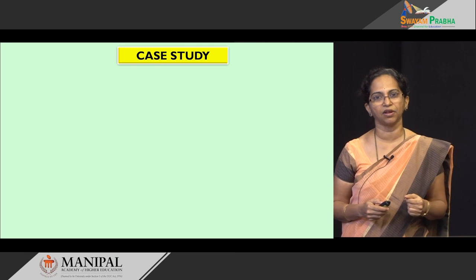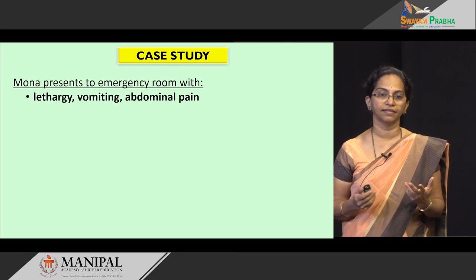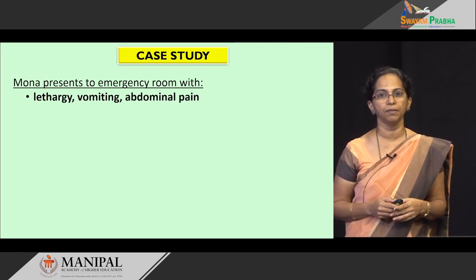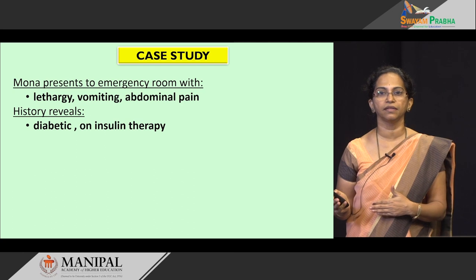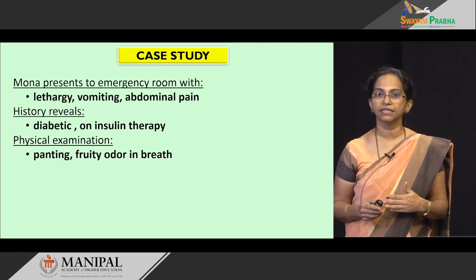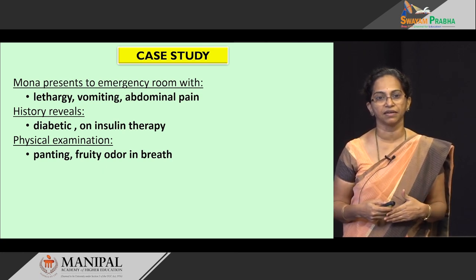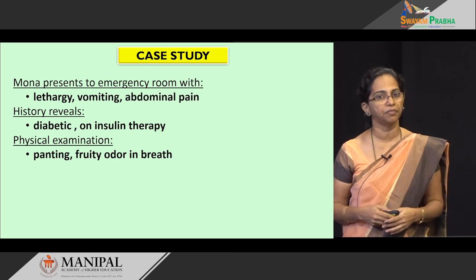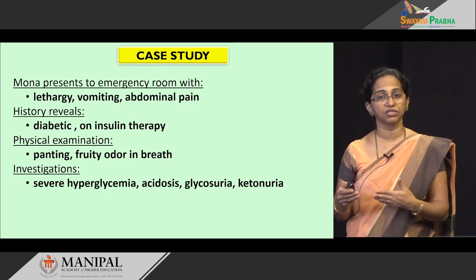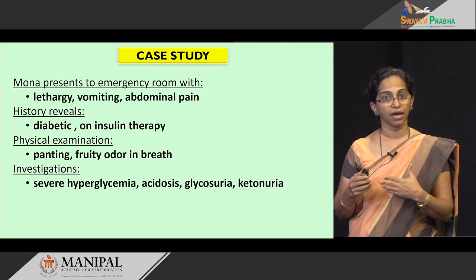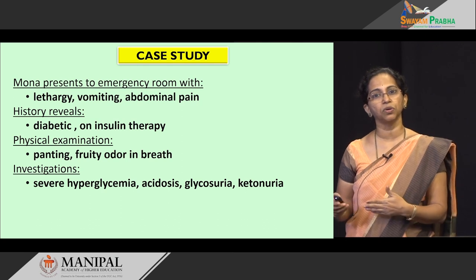Let us take the example of Mona. Mona is presenting to the emergency room with lethargy, vomiting, and abdominal pain. History reveals that she is a diabetic and on insulin therapy. Physical examination: she is presenting with deep breathing, rapid breathing, gasping, and she has a fruity odour in her breath. Investigations reveal that she is having severe hyperglycemia along with acidosis, glycosuria, and ketonuria.